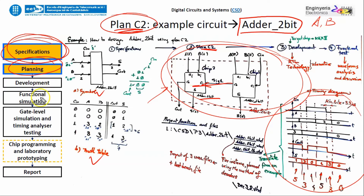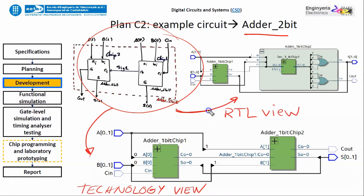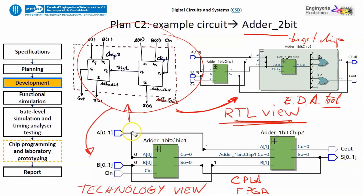Once you have invented your schematic on paper, it will be time for developing and functional simulation. Developing the 2-bit adder means translating your schematic into the RTL view by means of the electronic design automation tool you like, for a given target chip. You will get both the RTL view and the technology view that depends on the specific complex PLD or FPGA chosen as the target chip. You will generate two circuits that are pretty much the same as you had on paper.